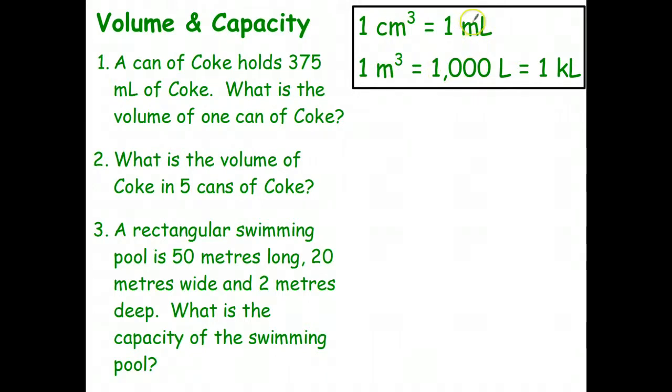You can use that fact to show that one cubic meter occupies the same space as 1,000 liters. The prefix in the metric system for 1,000 is kilo, so instead of writing 1,000 liters, you can write it as one kiloliter. These are the conversions we use to convert volume to capacity. Let's do a few questions.